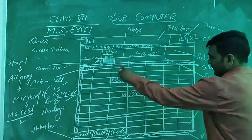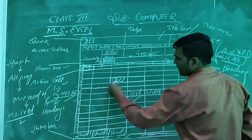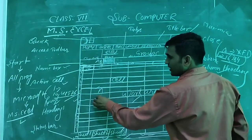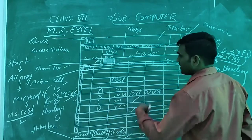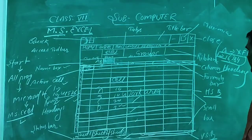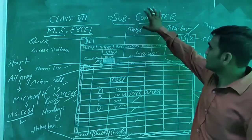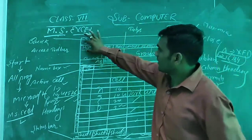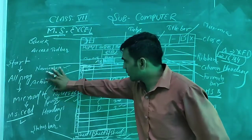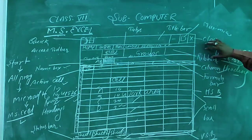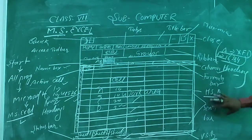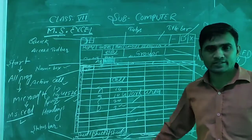This is the main work area where we can enter all information. In summary, at the top we have the tabs, ribbon, and quick access toolbar; in the middle there are cells, rows, and columns; and at the bottom there is a status bar. There are also scroll bars on the sides.